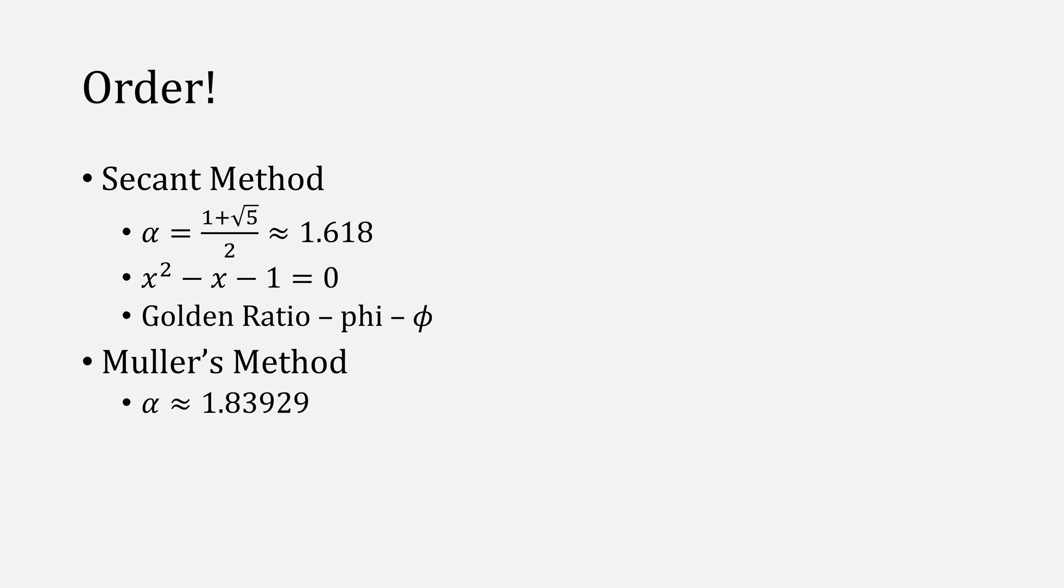Let's talk about the order of Muller's method. And remind you that I kind of refer to Muller's method as secant method, but with three points. For this, the order of secant method is about 1.618, which is the root of the function x squared minus x minus 1. That number is called the golden ratio. For Muller's method, the order is about 1.83929, which is the root of this function here.